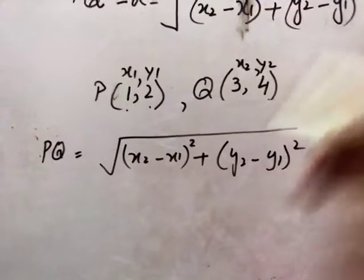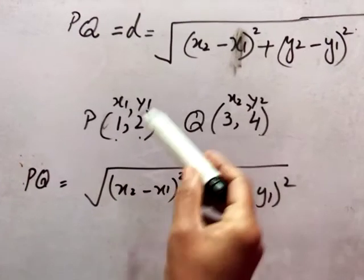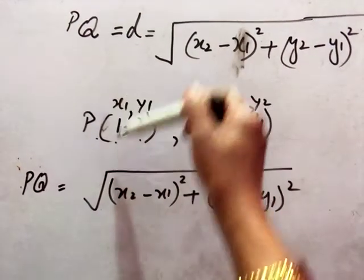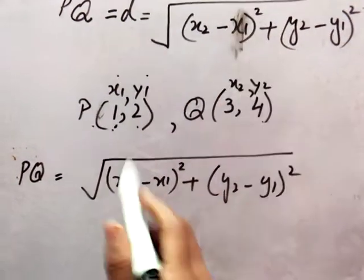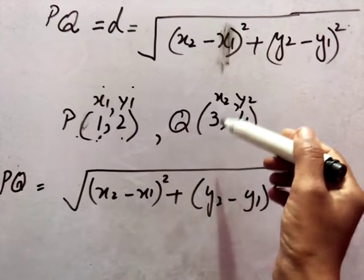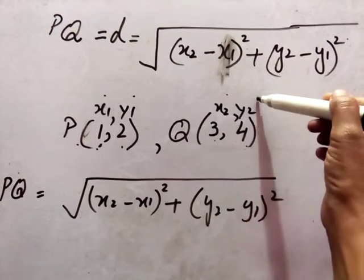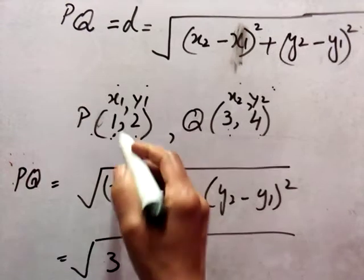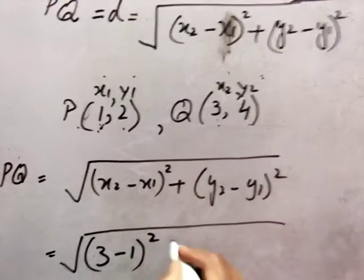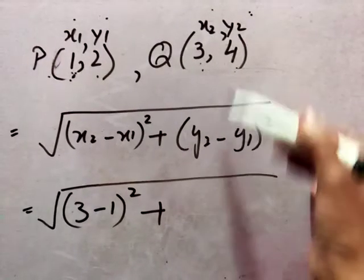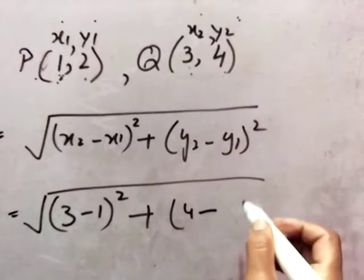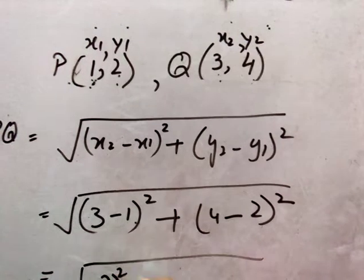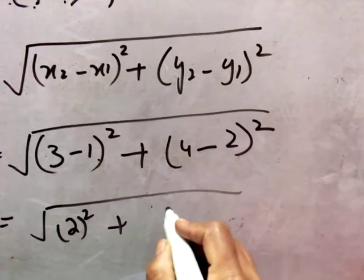Now we put in the values. For point P, the first coordinate is X1 and the second is Y1. For point Q, the first coordinate is X2 and the second is Y2. So X2 is 3 and X1 is 1, giving (3 minus 1) whole square; plus Y2 is 4 and Y1 is 2, giving (4 minus 2) whole square.